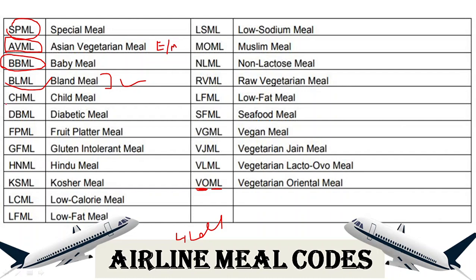CHML is the Child Meal — a soft, easy-to-chew meal for children, sometimes served with toys. DBML is the Diabetic Meal — no cakes, chocolates, jams, sugar, or syrup. CLML is the Celebration Cake Meal — if you book it in advance, you may be given free cakes. So CLML is for celebration and DBML is the diabetic meal where no cakes or chocolates are served.